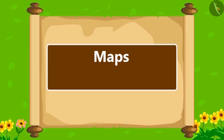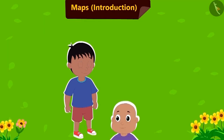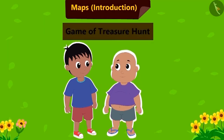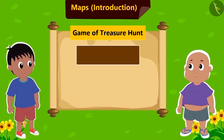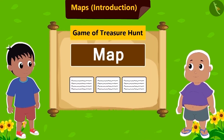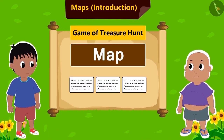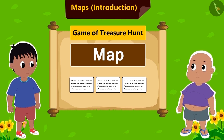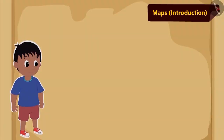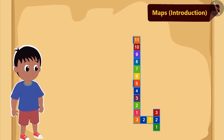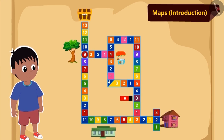In this lesson, we will learn about maps. Raju and Bablu are playing the game of treasure hunt. Raju has given Bablu a map and a few written instructions. Bablu will have to find the treasure following the given instructions. The map made by Raju looks something like this.